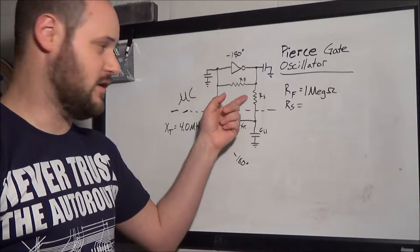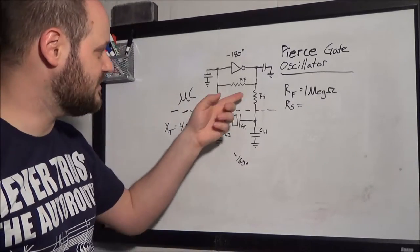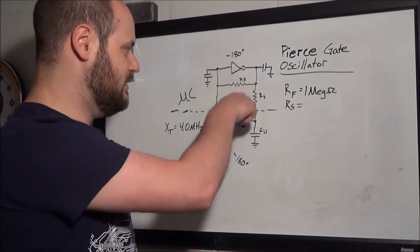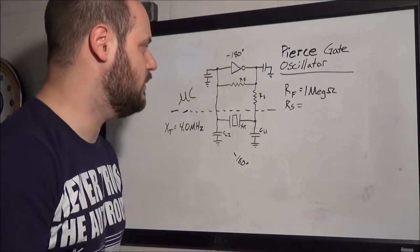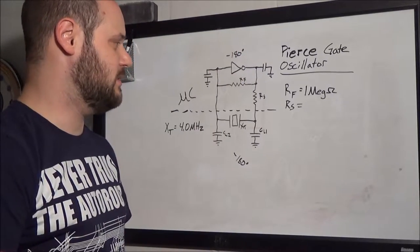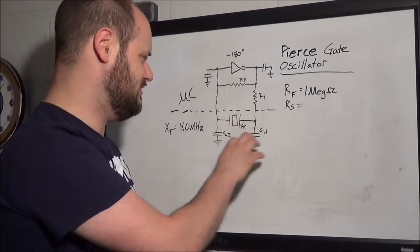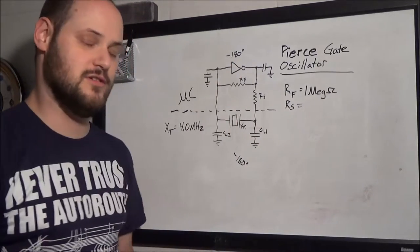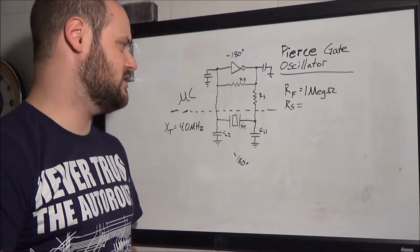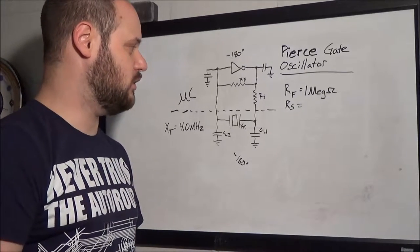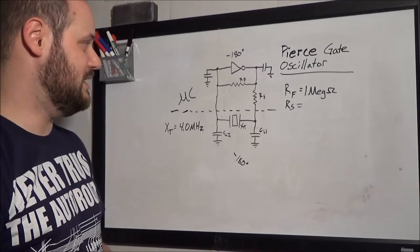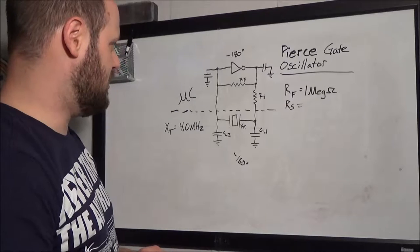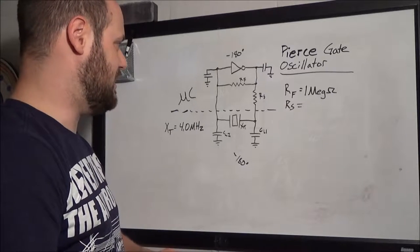Okay, so that brings us to RS. RS is the series protection resistor, more or less. What this does is it limits the current going to your crystal from your gate and your feedback circuitry there. It also helps isolate, just in general, the crystal circuitry from the gate circuitry up there. And it gives you a degree of control over what your output amplitude ends up being out of this oscillator.